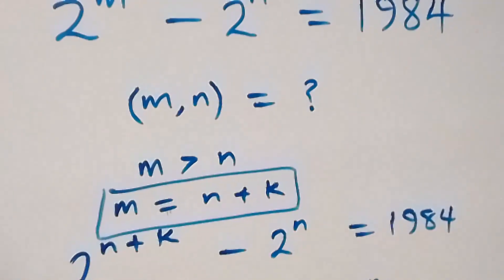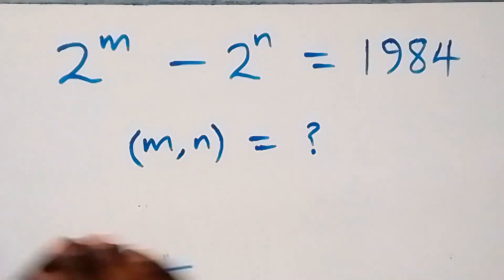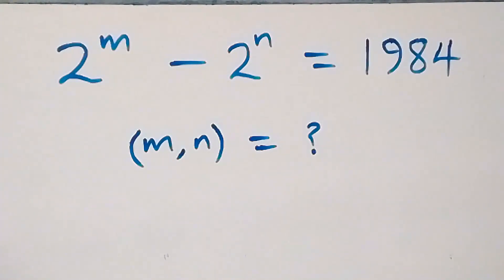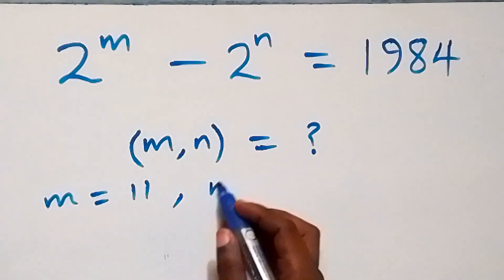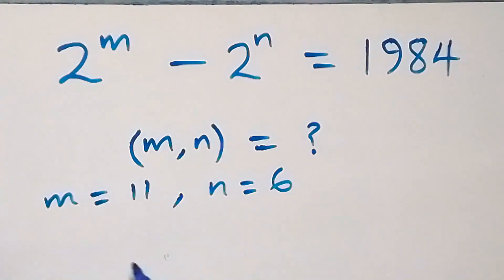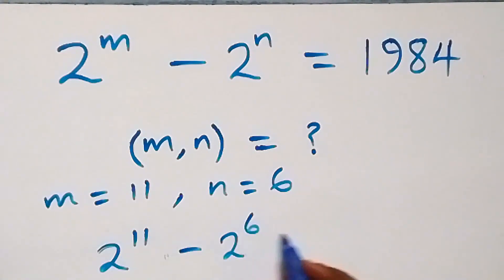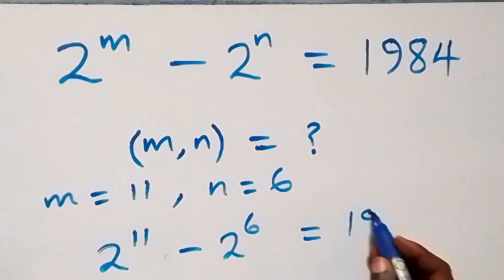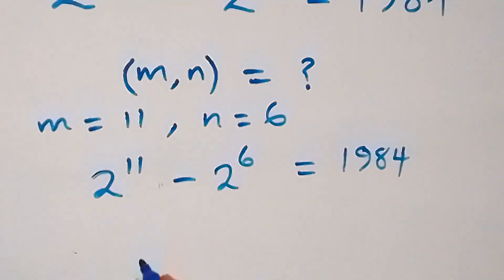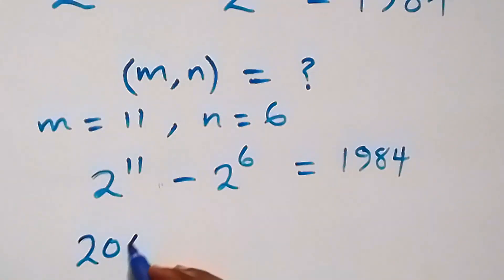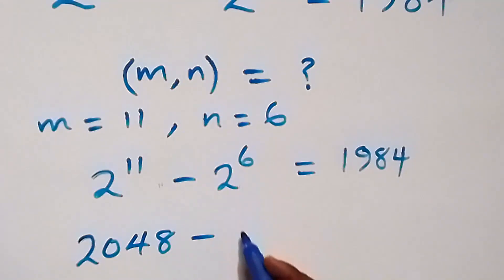So we have m equals 11 and n equals 6. To check if this satisfies the given problem, we substitute: m equals 11 and n equals 6, giving us 2 raised to power 11 minus 2 raised to power 6. We check whether this equals 1984. Now, 2 raised to power 11 equals 2048.